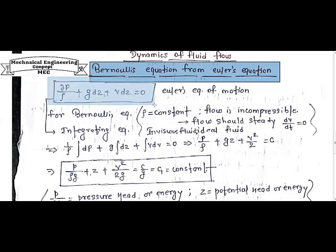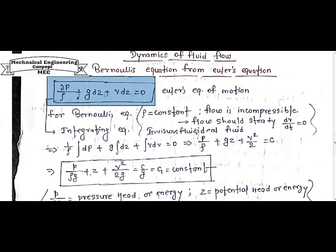As I discussed earlier, the Euler equation of motion is del P by rho plus g dz plus v dv equals zero. This is the Euler equation of motion for an element of fluid.